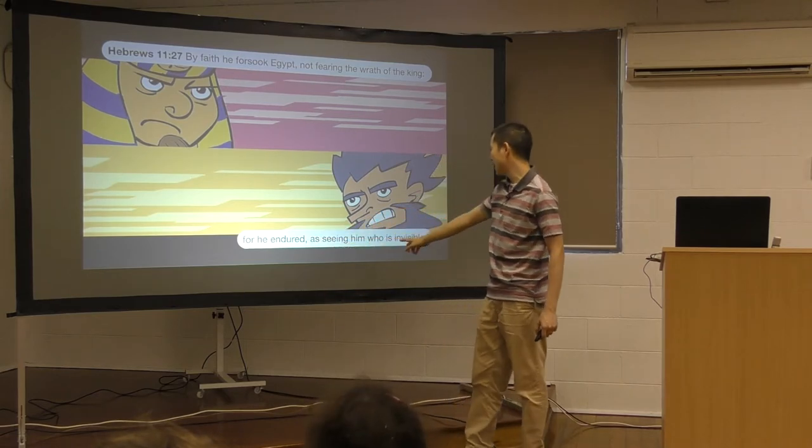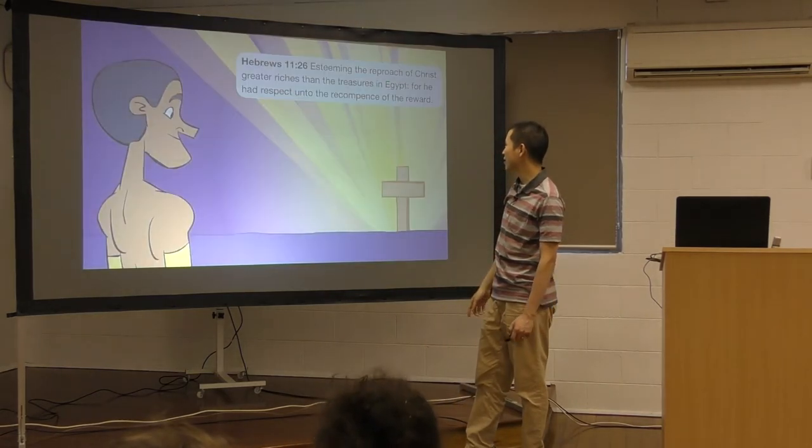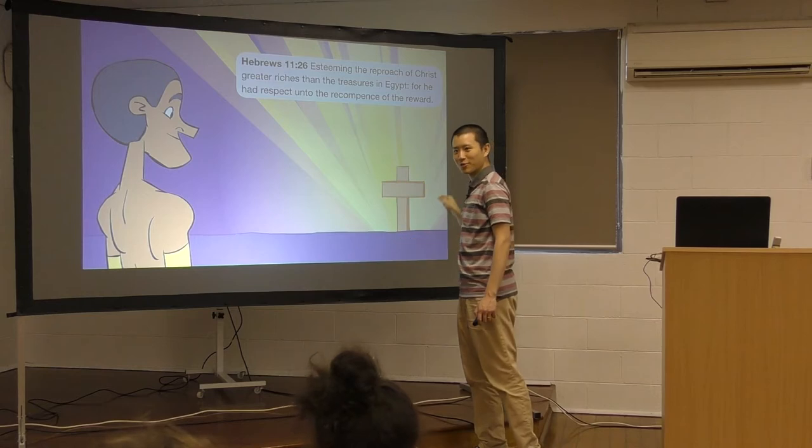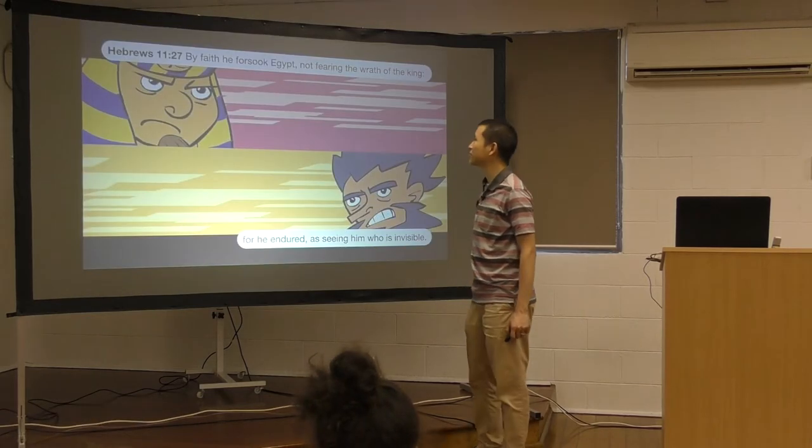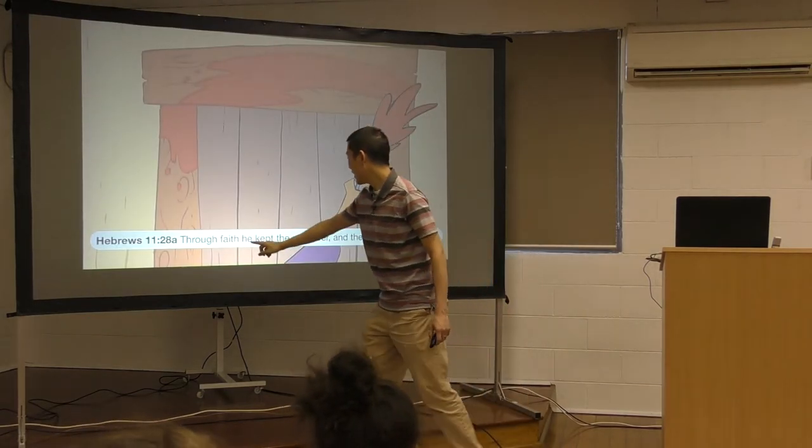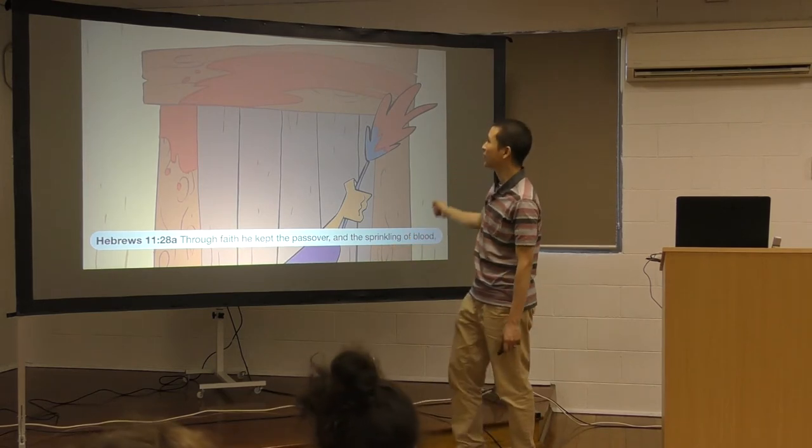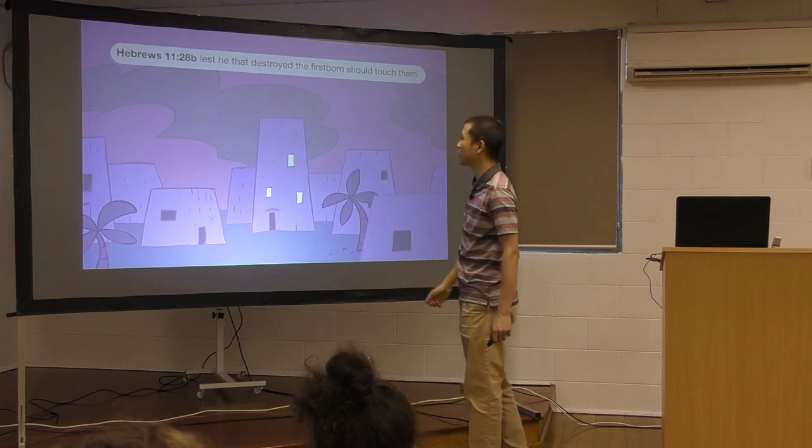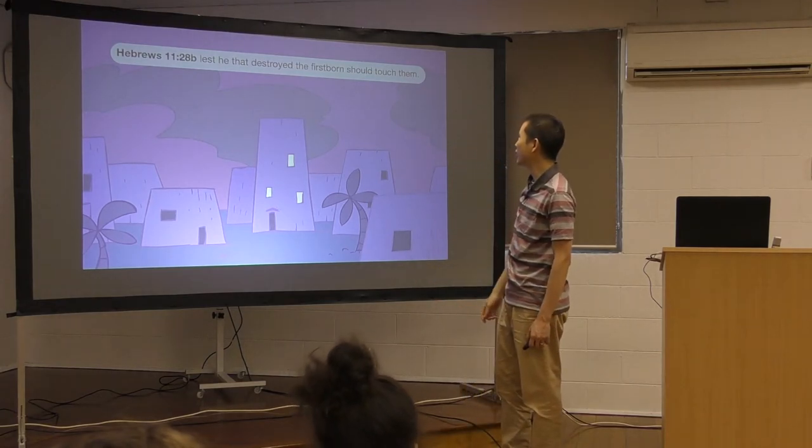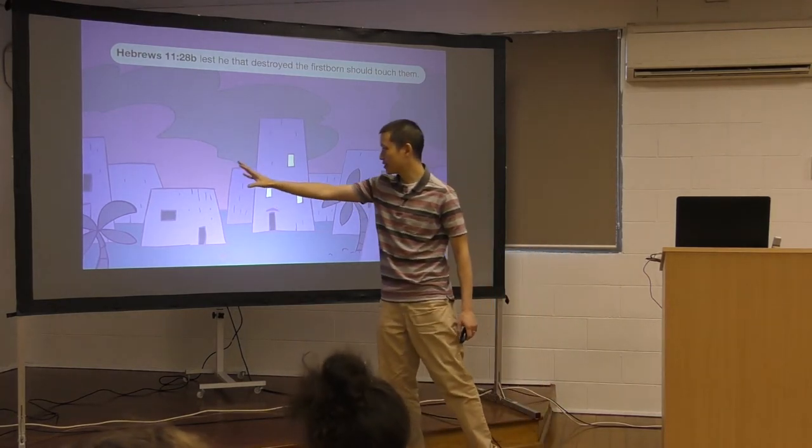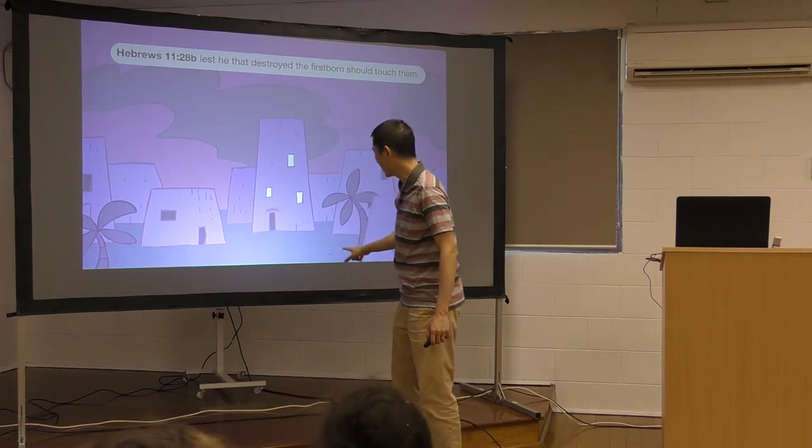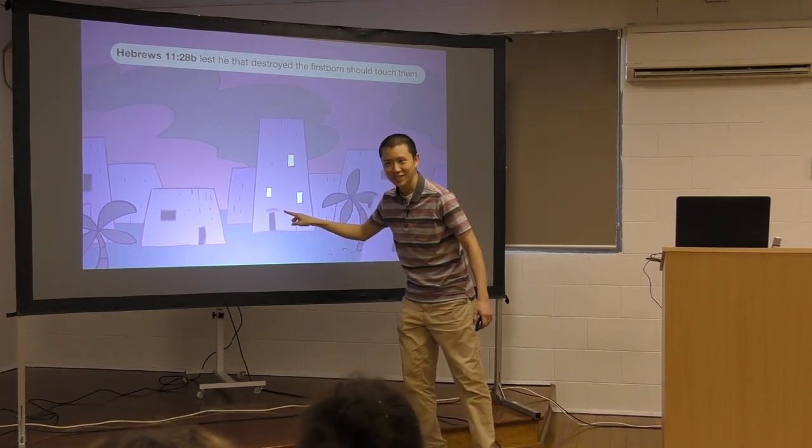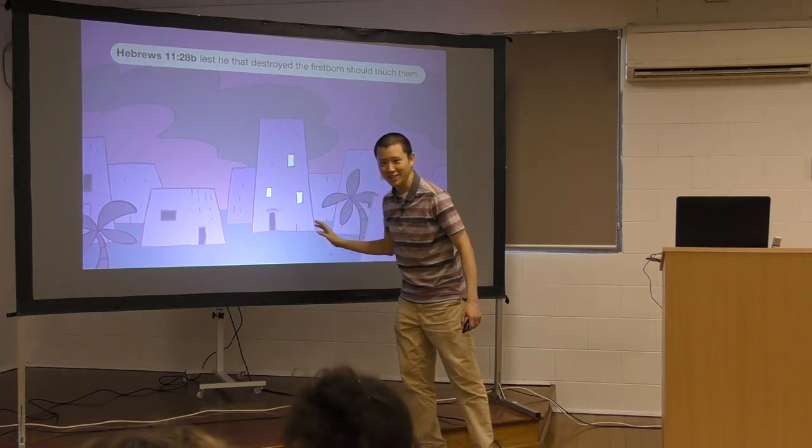For he endured a seeing him who is invisible. Who is him who is invisible? That's God. Through faith he kept the Passover and the sprinkling of blood. You remember they killed the Passover lamb, they put the blood on the doorposts. Lest he that destroyed the firstborn to touch them. So this is when the angel of death came through. But if they saw the blood, you see the blood on the doorpost there? And he passed over.